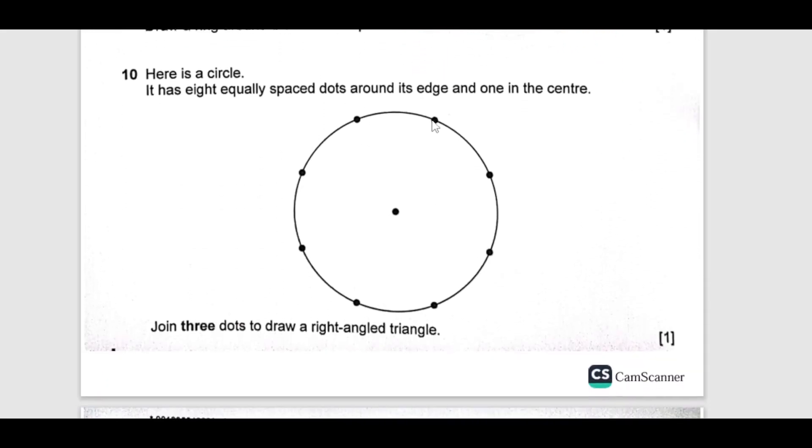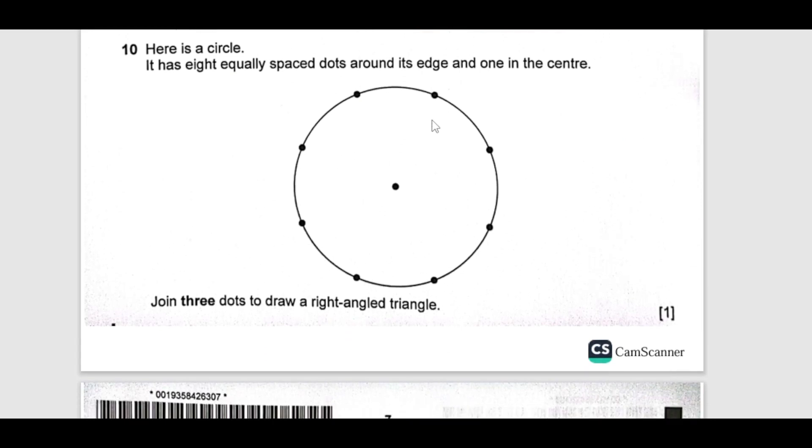Now, here is a circle. It has 8 equally spaced dots around the edge and one of them is at the center. This one is center. Join 3 dots to draw a right angle triangle. If you draw this one here from here and this one, then this is going to be 90. If you are taking these bigger ones then this center comes in between there. Then they become 4 dots. But we are allowed to join only 3 dots. You can choose center and other any other 2 dots leaving one in the middle here.